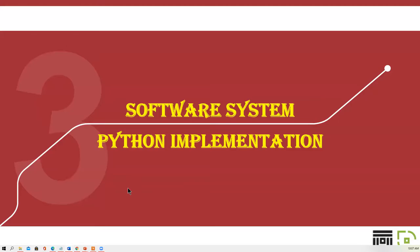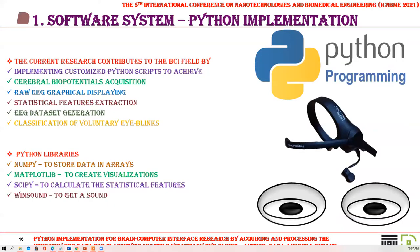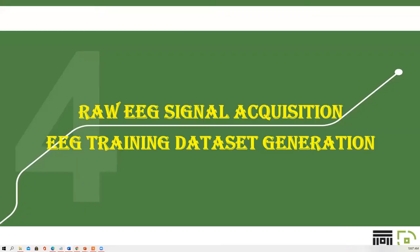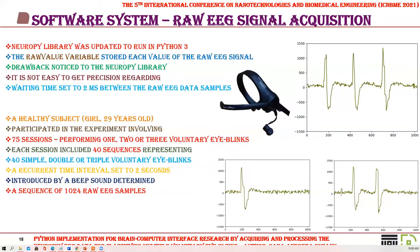The current research contributes to the Brain-Computer Interface field by implementing customized Python scripts to achieve: cerebral biopotentials acquisition, raw EEG graphical displaying, statistical features extraction, EEG dataset generation, and classification of voluntary eye blinks. The NeuroPy library was updated to run in Python 3. The raw value variable stored each value of the raw EEG signal detected by the embedded Neurosky biosensor. As a drawback to the NeuroPy library, it is not easy to get precision regarding the waiting time of 2 ms between raw EEG data samples.